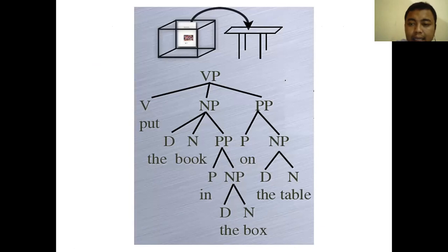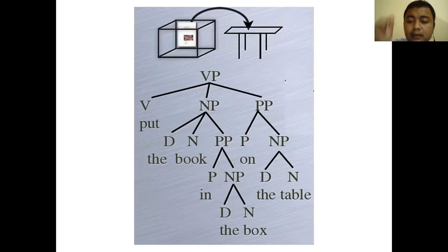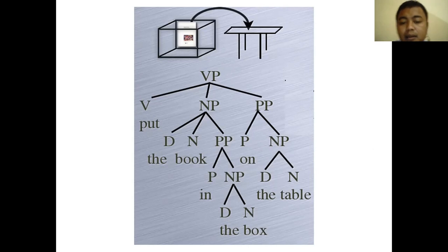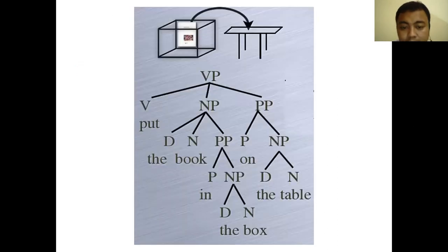That is why you must know part of speech. The table, the box, the book can each be a noun phrase. For the first interpretation, 'the box in the box' forms one unity — it is a noun phrase where 'in the box' is a prepositional phrase modifying 'the box.' Then 'put the box in the box' forms the verb phrase, and 'on the table' tells where it is placed. So the structure is: put + [the box in the box] as NP + on the table as PP. The book in the box is one unit as a noun phrase, then 'on the table' is attached to the VP.